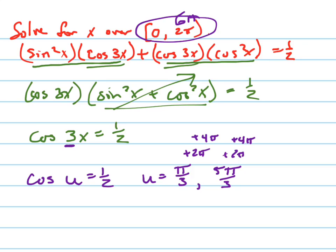When I replace, what did u really, what did I substitute u for? 3x. When I replace 3x for u, what happens? What does π over 3 become? It's not π over 3 anymore, now it's what? π over 9, right, π over 9.